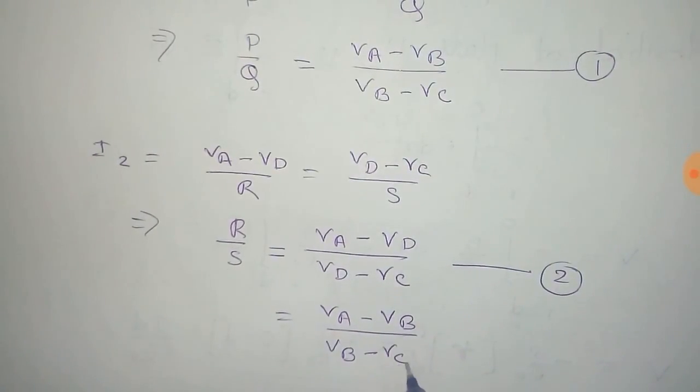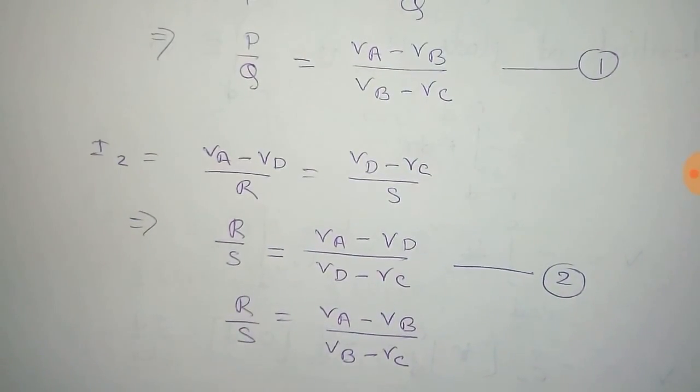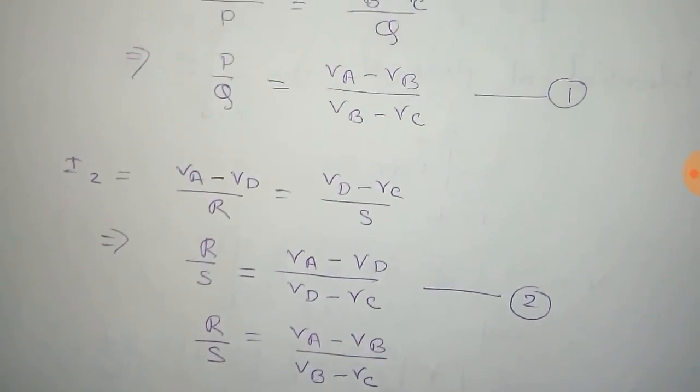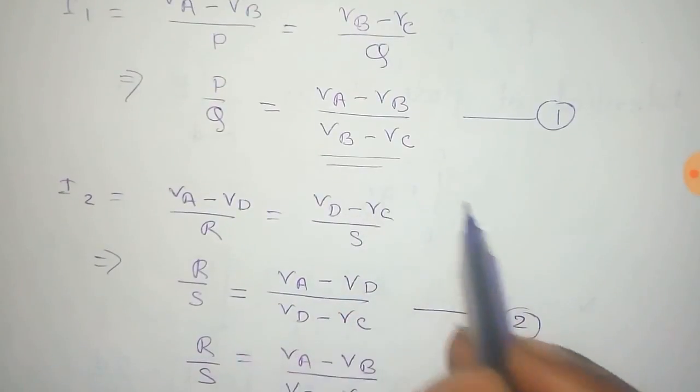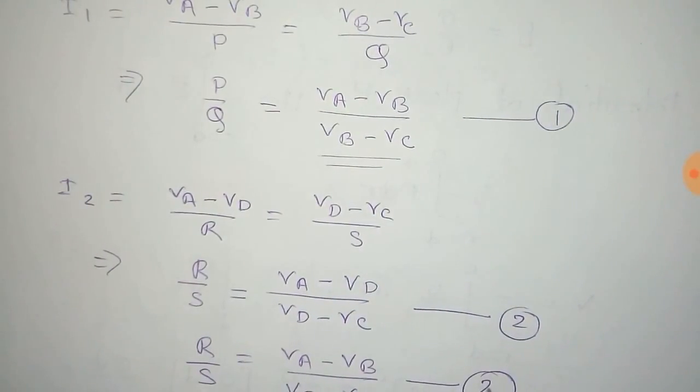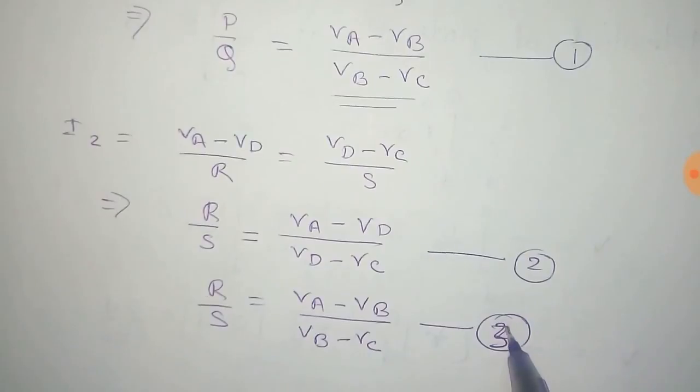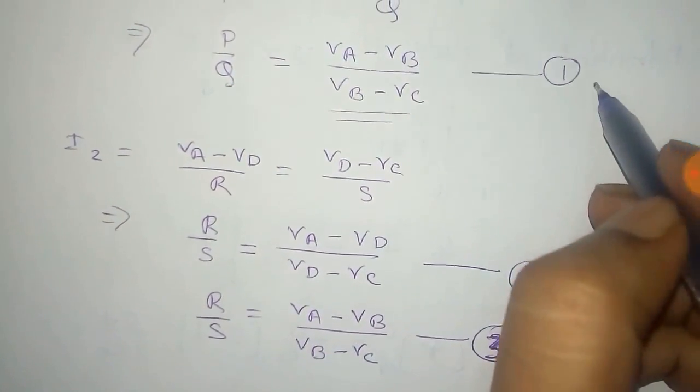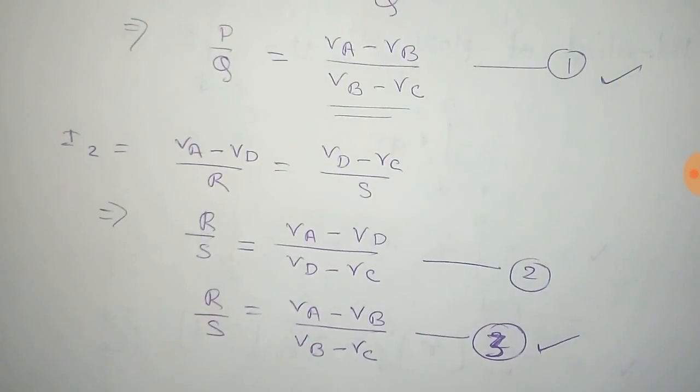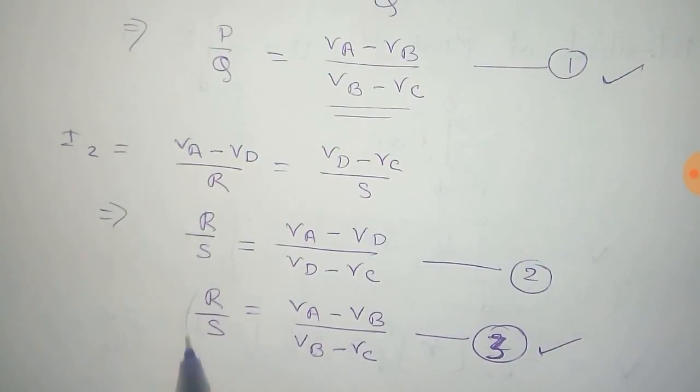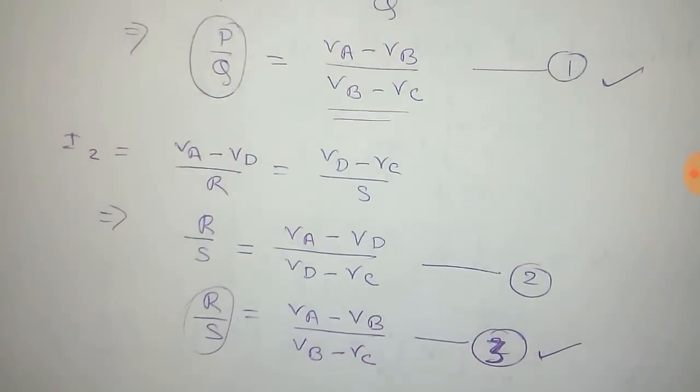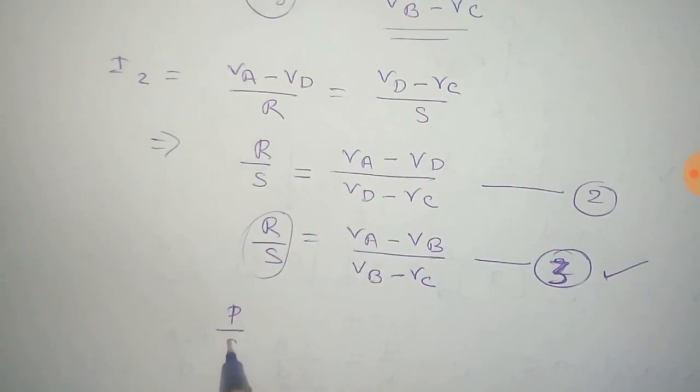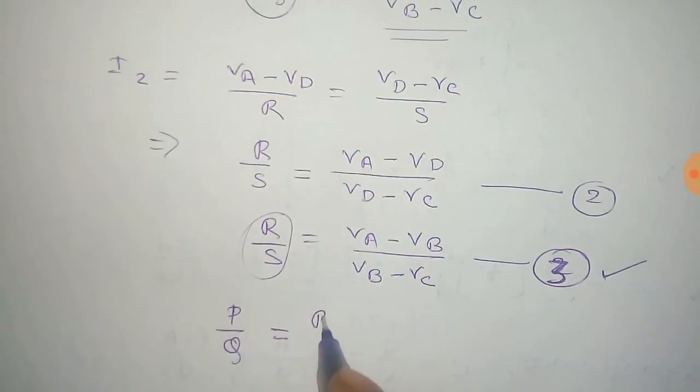And you can see that equation number 1 and equation 3 are similar. So we can equate the left hand side of equation number 1 and 3 because the right hand side of these equations are the same. So we can say that P by Q equals R by S.